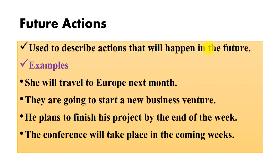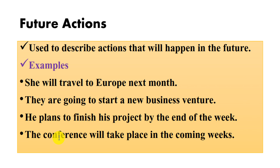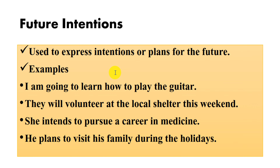Number one is future actions. The future tense is used to describe actions that will happen in the future. For example: she will travel to Europe next month; they are going to start a new business venture; he plans to finish his project by the end of the week; the conference will take place in the coming weeks.